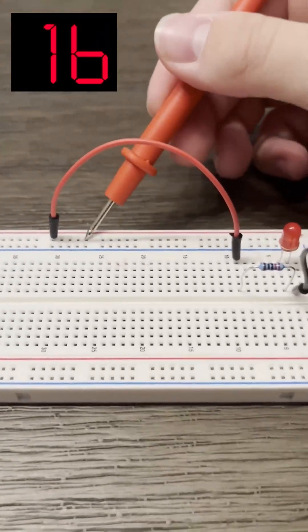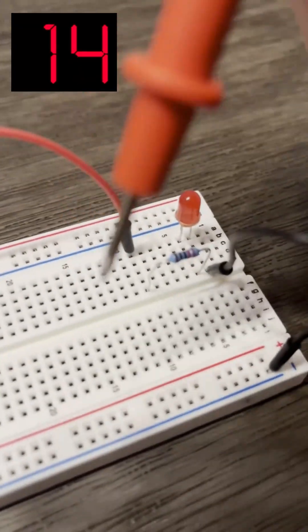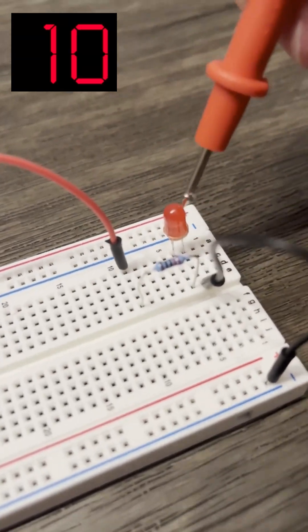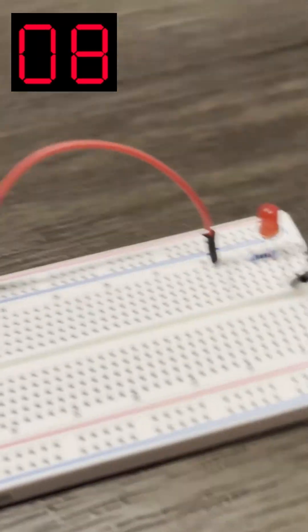As you just learned, power comes off the power rail down onto this row, over this resistor to the LED to the ground, and that's it.